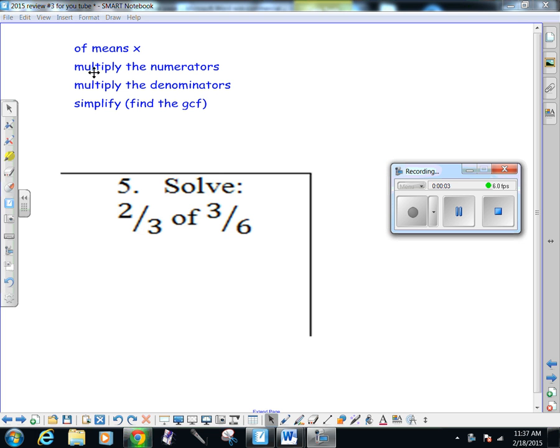So here's question 5. We need to recall that when you are multiplying, the word of means to multiply. What I'm going to do here is read over my rules. The first thing when I multiply fractions is I multiply my numerators, multiply my denominators, and then simplify by finding the GCF of the numerator and the denominator.